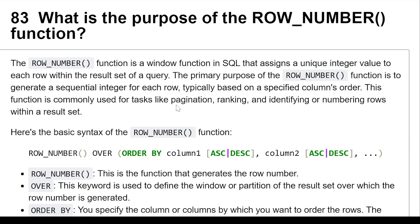The row number function is a window function in SQL that assigns a unique integer value to each row within the result set. The primary purpose of the row number function is to generate a sequential integer for each row, typically based on a specific column order.